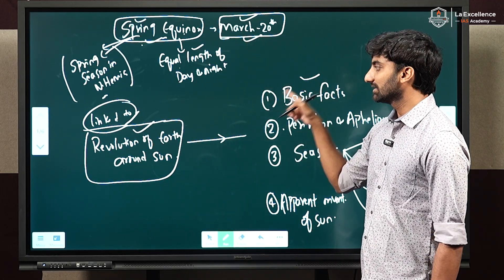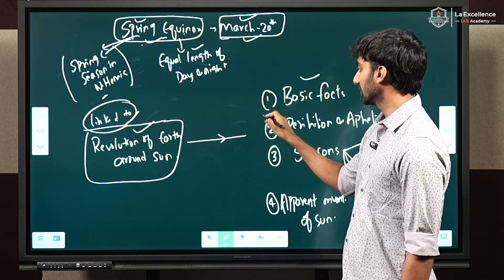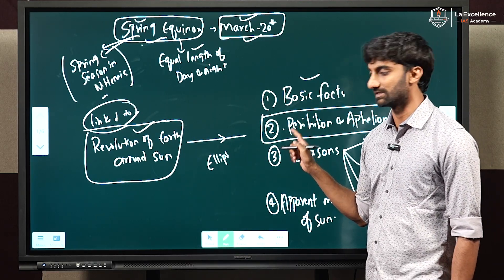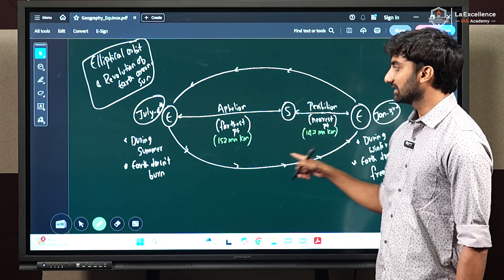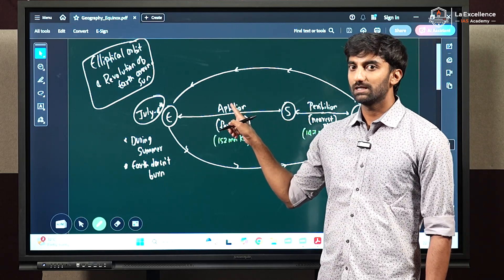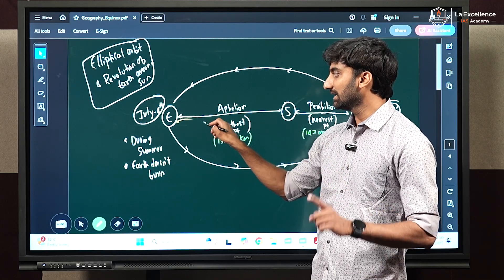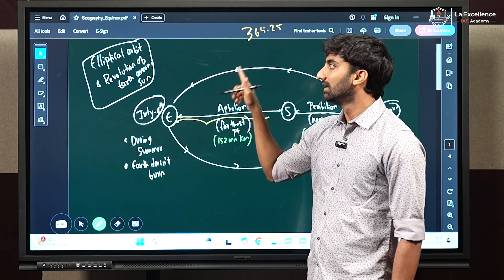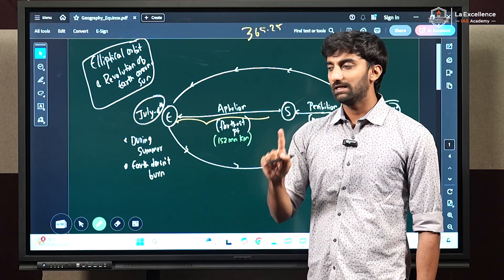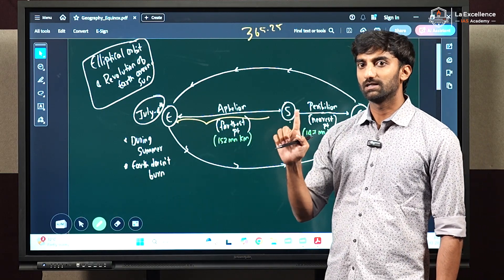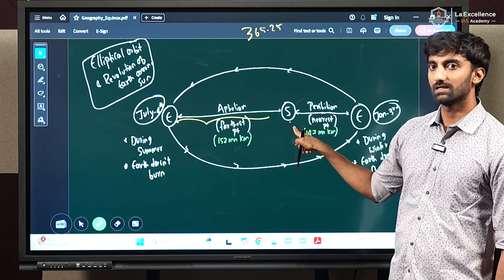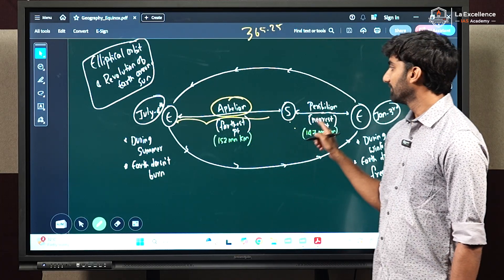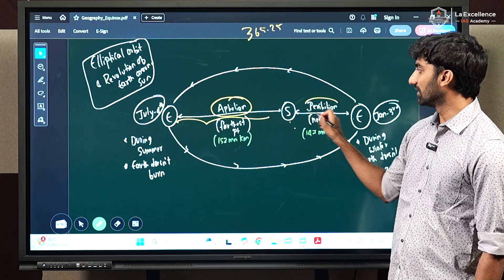We have seen all basic facts related to revolution of earth around sun. Next we will go to the important topic related to the elliptical orbit of earth around sun and the concept called perihelion and aphelion position. Earth is revolving around sun from west to east direction, or counterclockwise direction. The shape of the orbit is elliptical. In 365.25 days, there will be one day where earth's position will be farthest from the sun, and another day where earth's position will be nearest to the sun. That farthest position is called aphelion, and the nearest position is called perihelion.